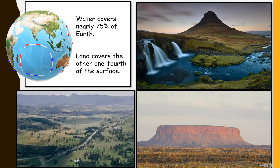Dear students, as we all know, one-fourth of the Earth's surface is covered by land. The land on the Earth is not the same everywhere. These different features found on the surface of the Earth are called landforms. Landforms can affect the weather, climate and lifestyle of a community. The Earth has an infinite variety of landforms as shown in the pictures.